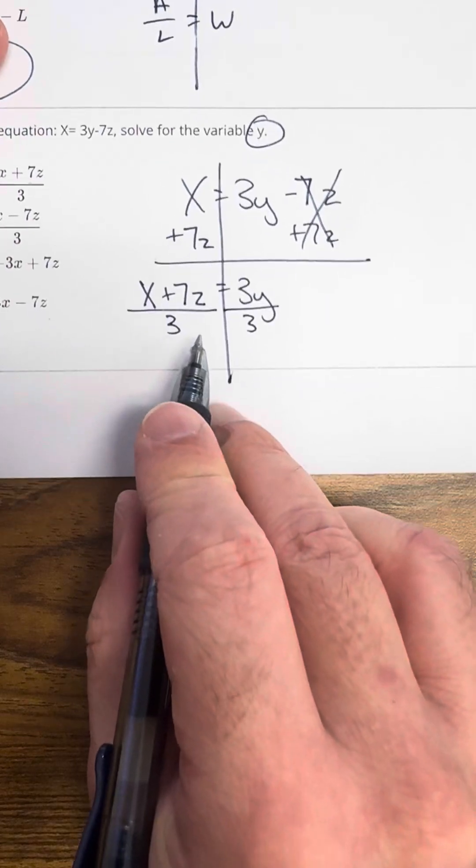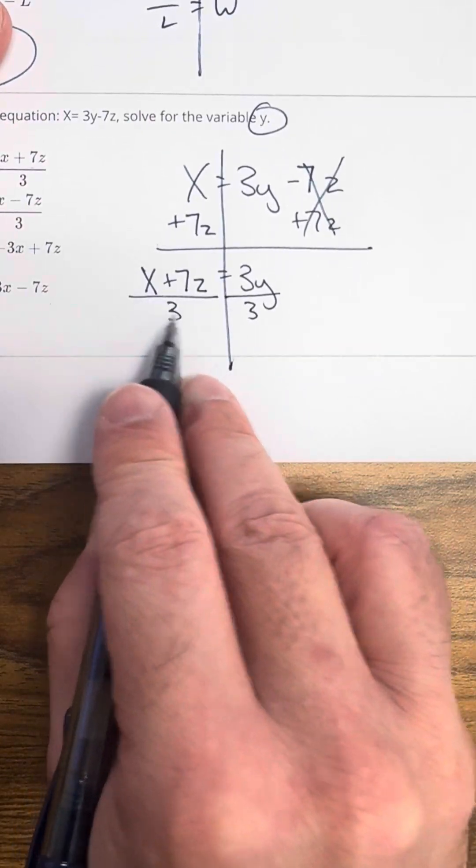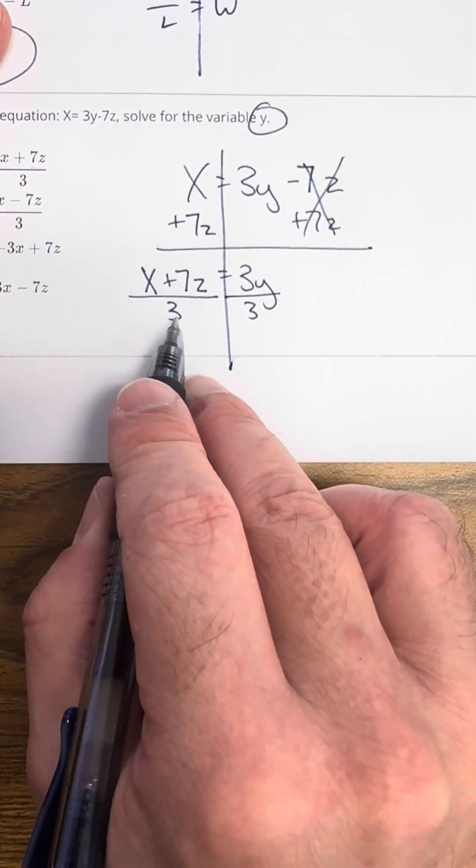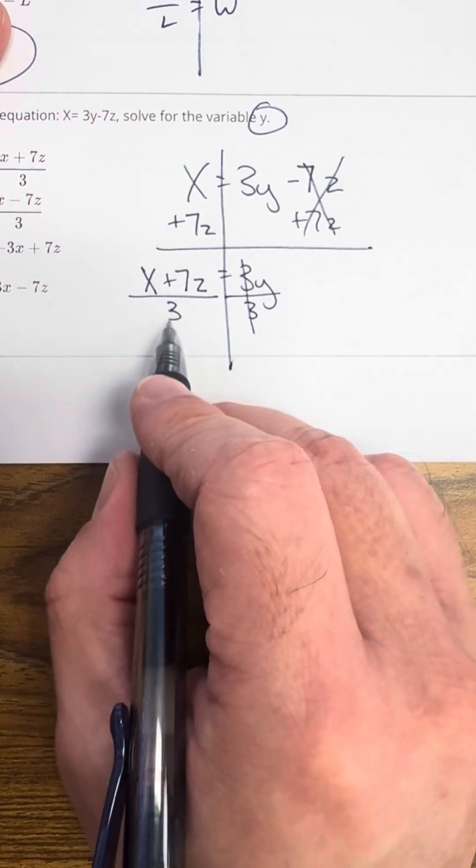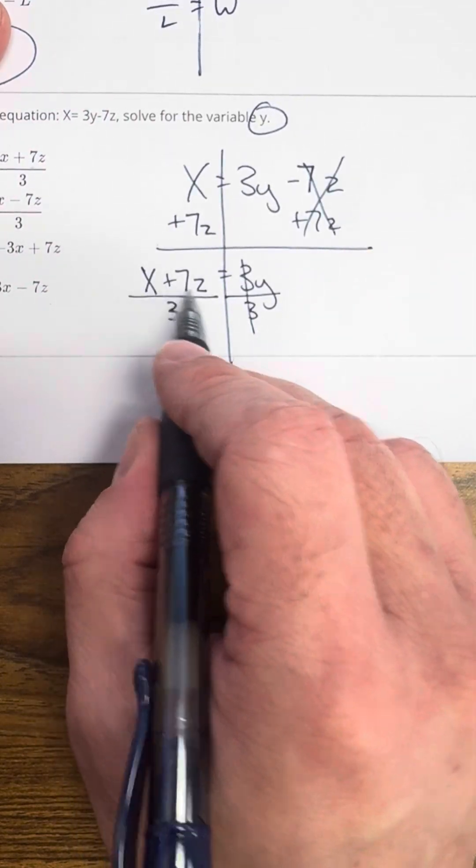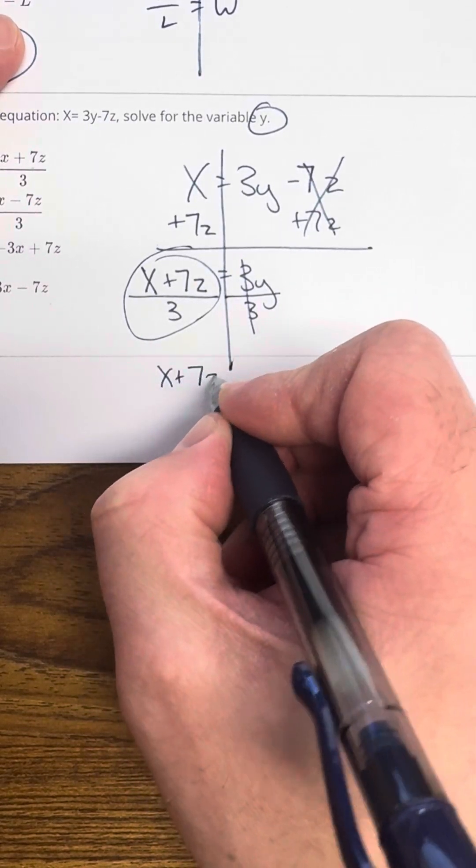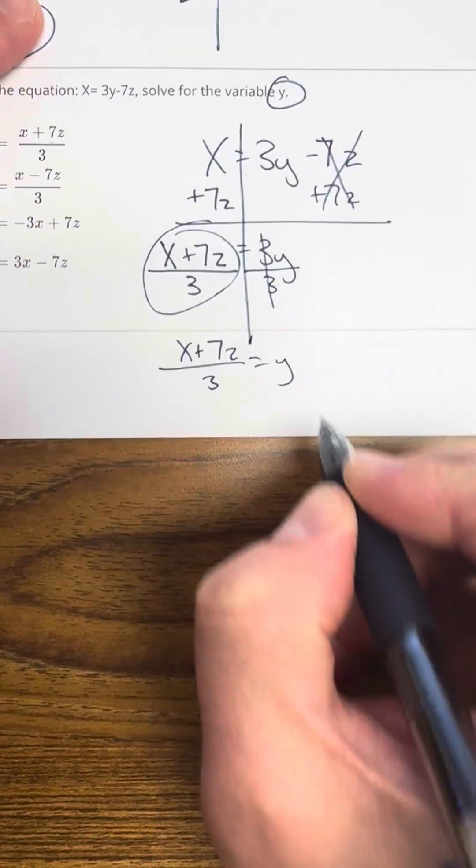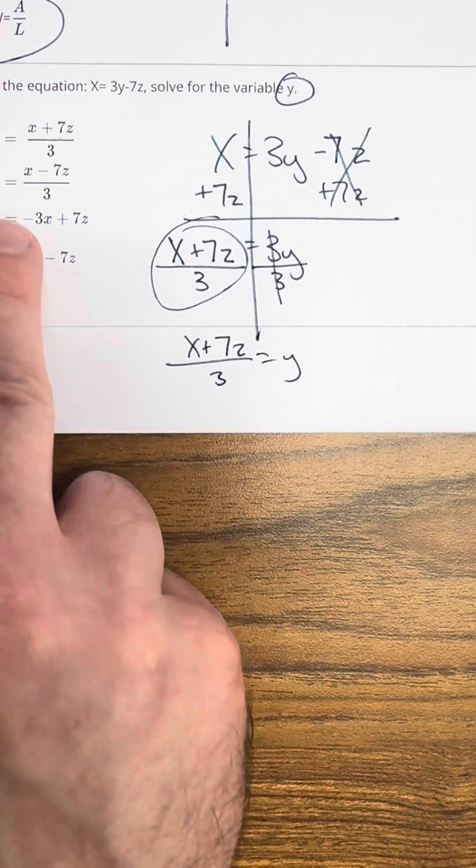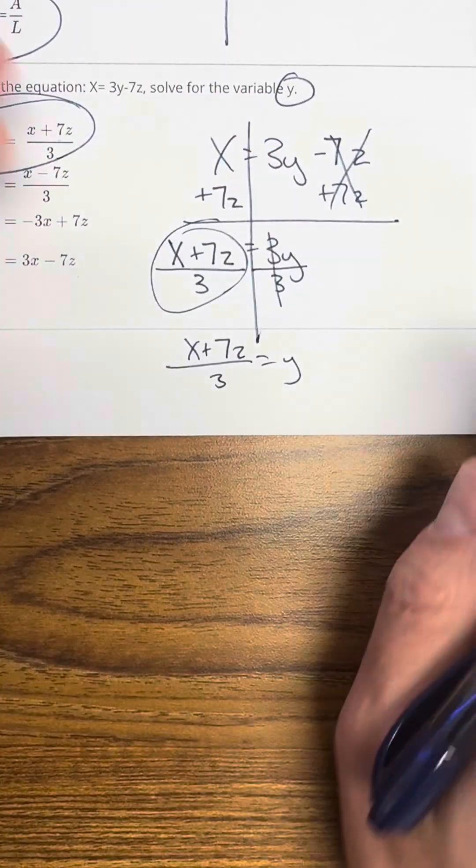Now I can divide by 3 on both sides. And I want you to write it just like this, where the 3 is kind of in between because I'm dividing both of those values by 3. Now, clearly, I can't divide X by 3 or 7Z by 3. This is going to be part of my final answer. So it's going to be X plus 7Z over 3 equals Y. And that's going to be A. So be really careful there.